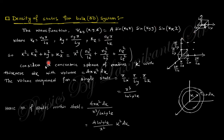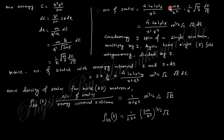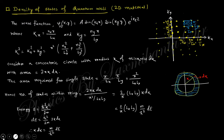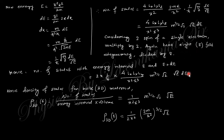For three-dimensional — bulk — material, the wave function and energy value are given. In k-space, consider a small volume of 4πk²dk. The volume of a single state is (π/Lx)(π/Ly)(π/Lz), so π³/V. The number of states within this shell follows accordingly. You multiply by two for electron spin and divide by eight for eightfold degeneracy — because for a given energy, kx, ky, kz can take eight combinations. Finally you obtain the 3D density of states, which is proportional to √E.